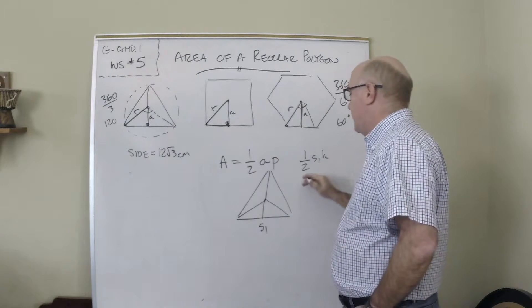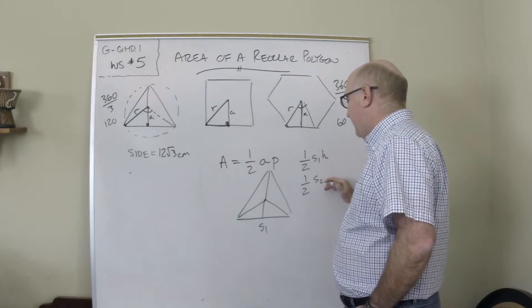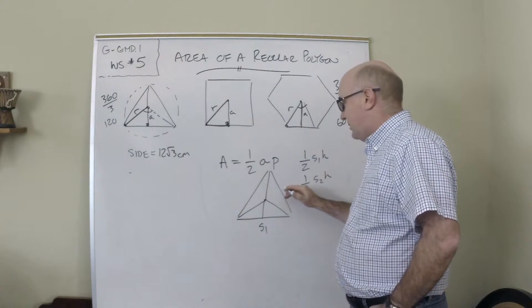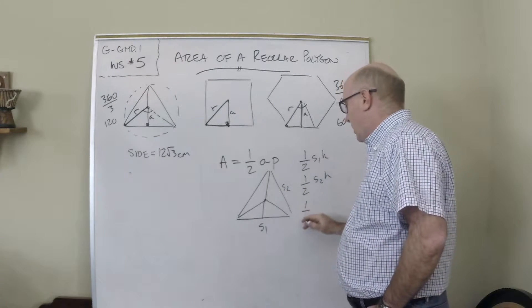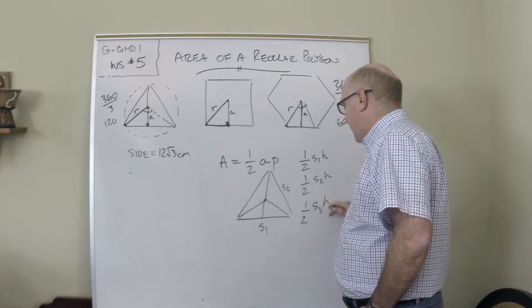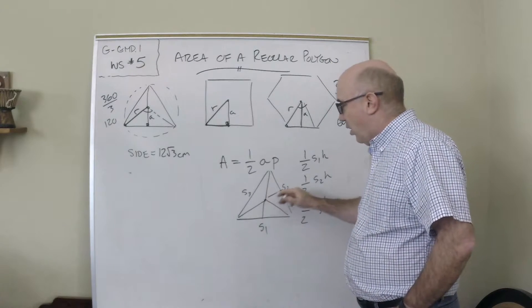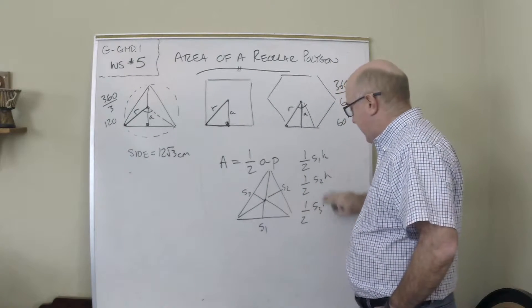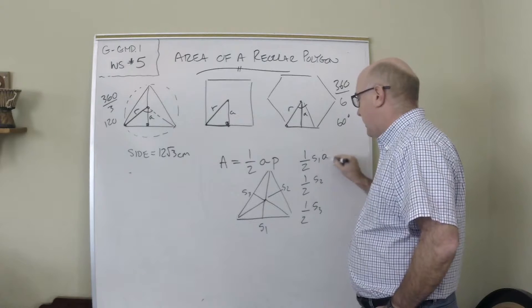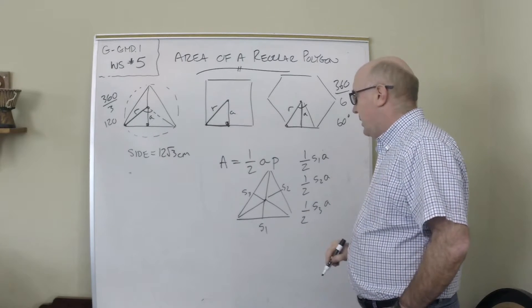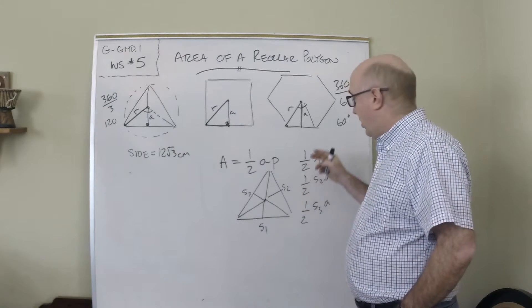You would have one that would be one-half side one times the height. If this is side one, you'd have another one that would be one-half its height, so side two, and one-half side three times the height. The heights of all of these triangles is an apothem.